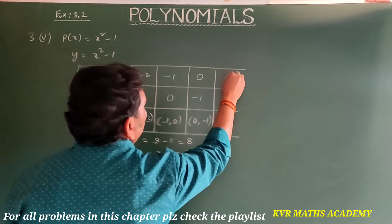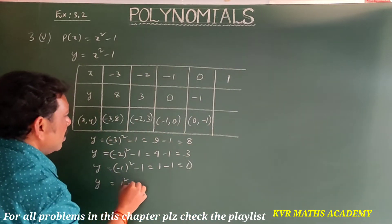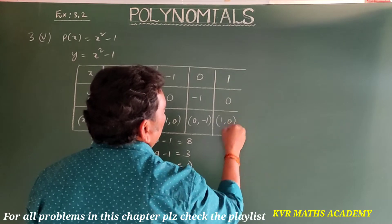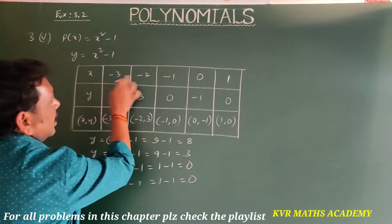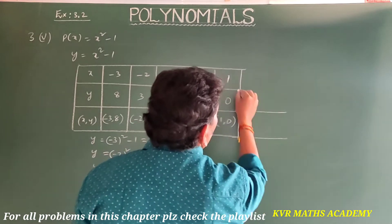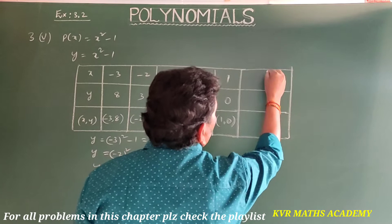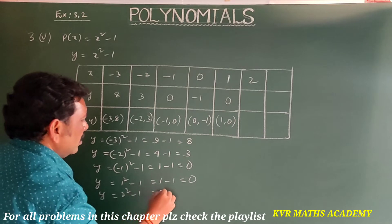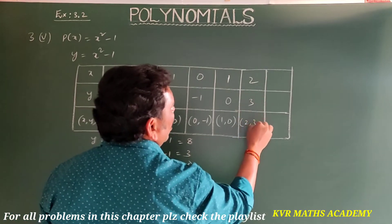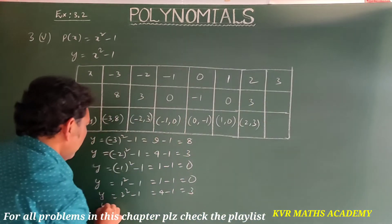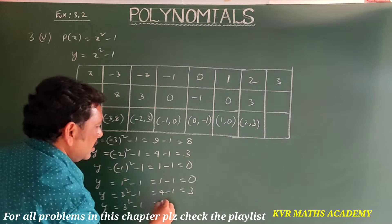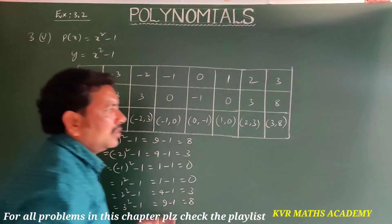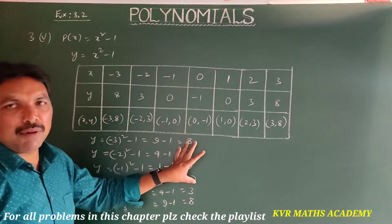For x = 1: y = 1² - 1 = 0, so the coordinate is (1, 0). For x = 2: y = 2² - 1 = 4 - 1 = 3, giving (2, 3). For x = 3: y = 3² - 1 = 9 - 1 = 8, giving (3, 8). Note down this table.